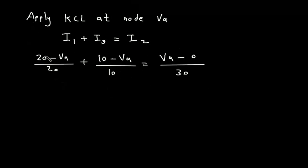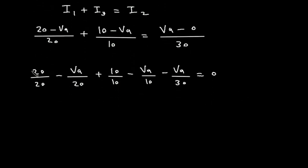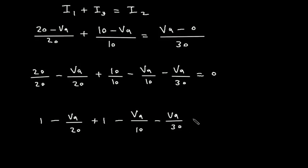Now if we simplify this: (20/20) minus (VA/20) plus (10/10) minus (VA/10) minus (VA/30) is equal to 0. Taking VA terms to one side, this becomes 1 minus VA/20, plus 1 minus VA/10, minus VA/30 equals 0.